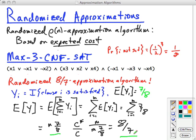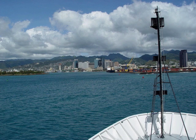Randomization doesn't always work out so well. It just happens that the structure of this problem, it works. As we get closer to home, entering Honolulu Harbor, we'll now move on to linear programming approximations.